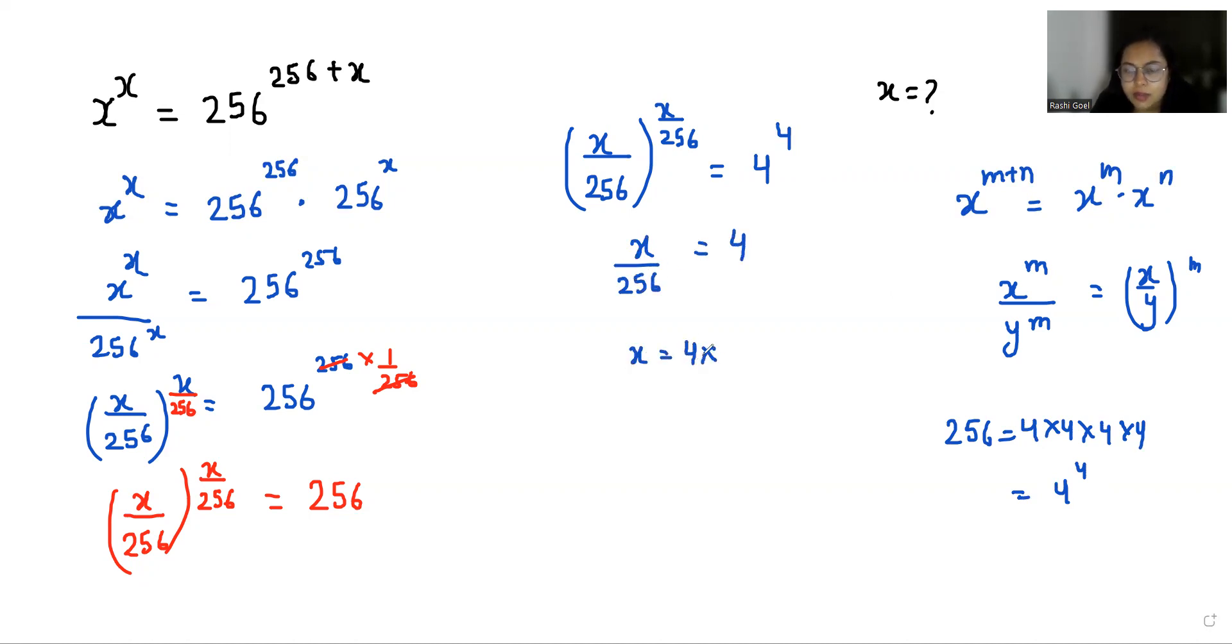So x equals 4 times 256, which equals 1024. The value of x is 1024.